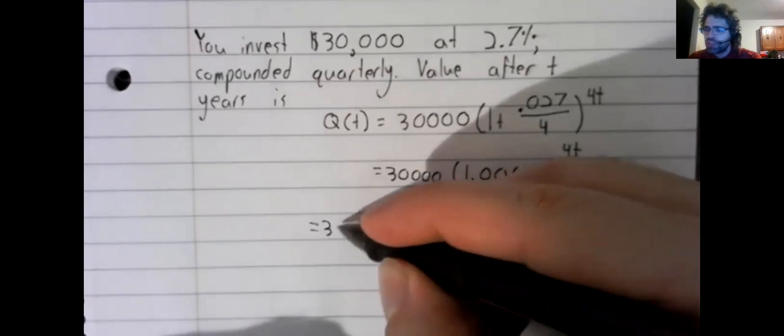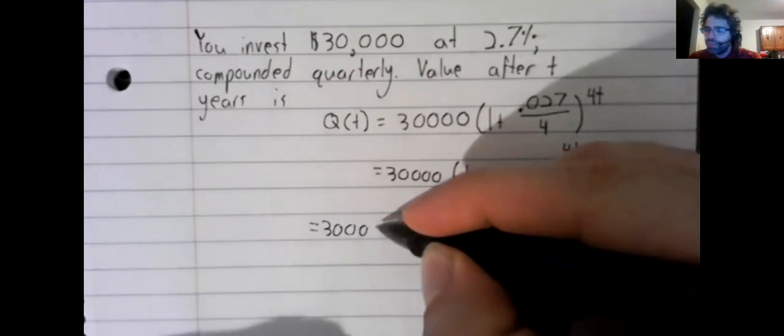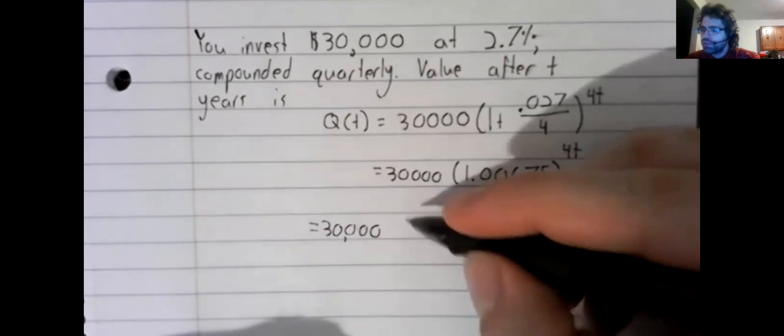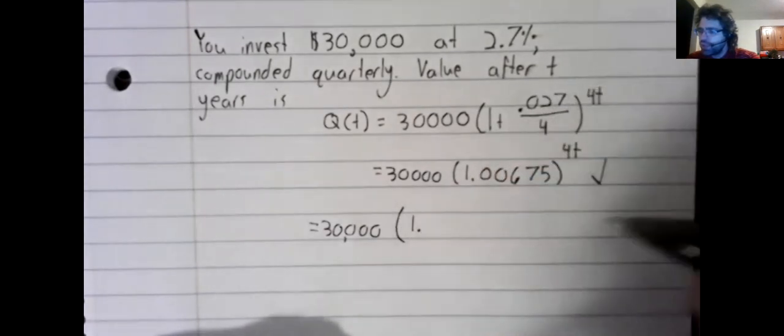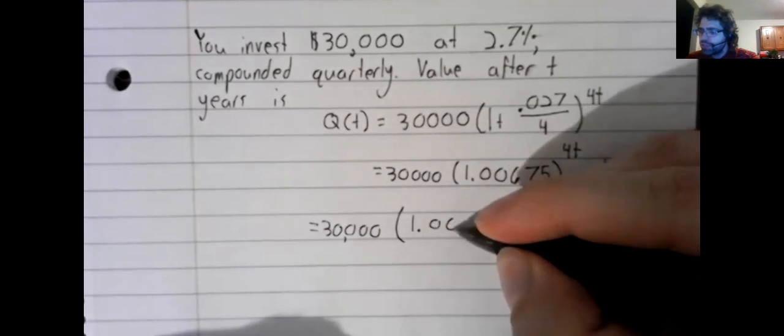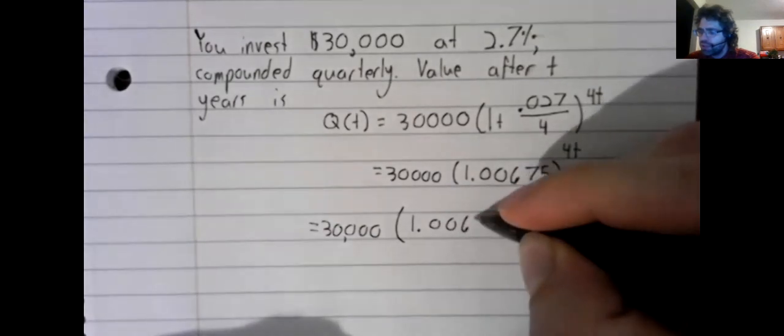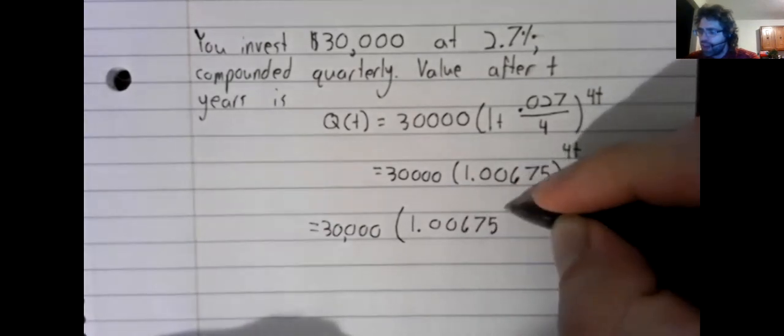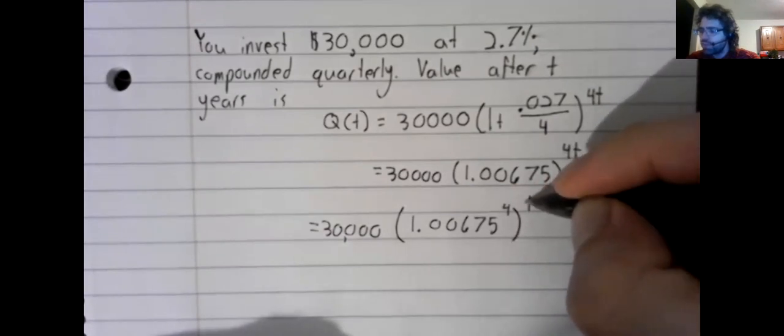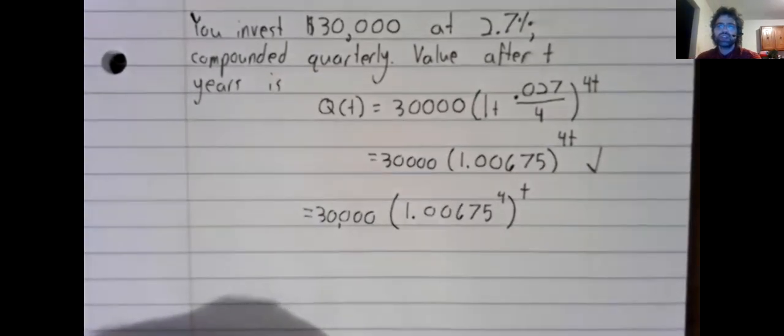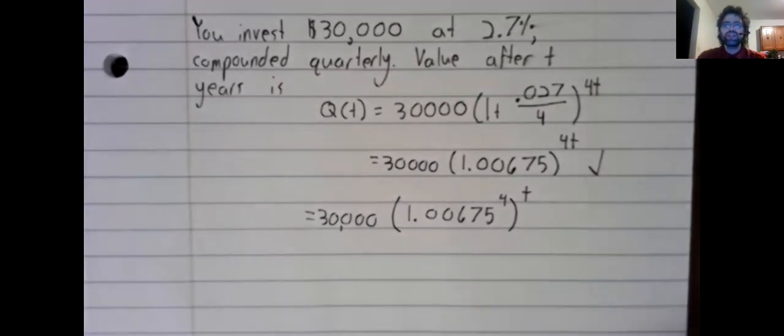But no, we could rewrite this as 1.00675 raised to the fourth raised to the power of T.